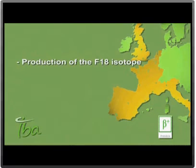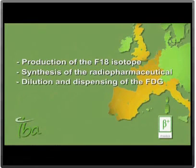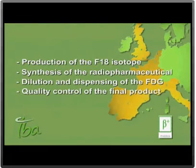Production of the Fluor18 isotope with a cyclotron. Synthesis of the radiopharmaceutical, the FDG, or fluorodeoxyglucose. Dilution and dispensing of the FDG into small vials according to the doctor's requirements, and quality control of the final product.